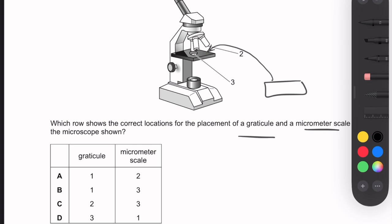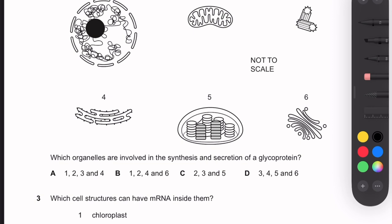So number three for the micrometer scale, and the graticule is for number one. The answer is letter B.